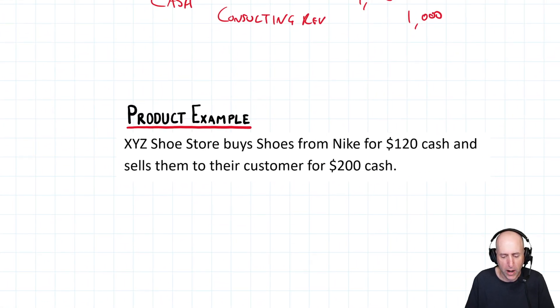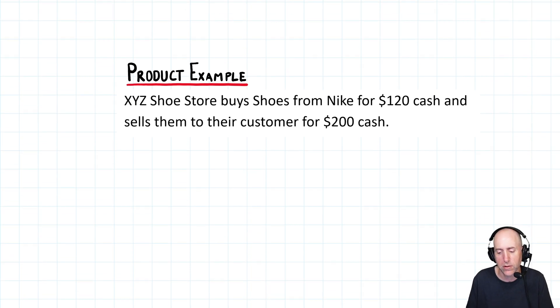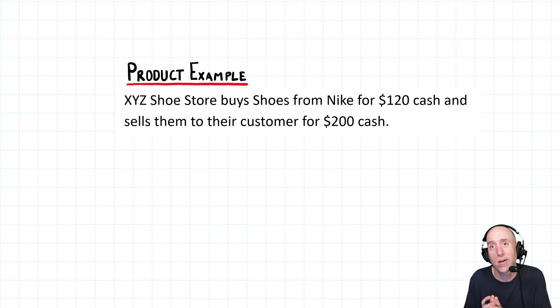XYZ shoe store buys shoes from Nike for $120 cash, then turns around and sells them to their customer for $200 cash. So when a company buys their product from a supplier for one price, presumably a low price, and sells it to the customer for a higher price. Think of Walmart, that's the model. Companies that sell inventory, that's a common model. We're going to assume the Walmart model - we bring in products that somebody else makes, Nike makes the shoes, we buy them from Nike, and we turn around and sell them at a higher price to our own customer. So when they buy shoes, they don't debit shoes, they debit inventory. And they credit cash.